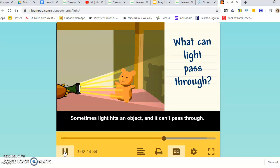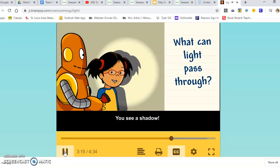Things cast shadows because they block the light. Sometimes light hits an object and it can't pass through. The object blocks the light and keeps it from going to the other side. So you see a dark spot that's shaped like the object. You see a shadow.